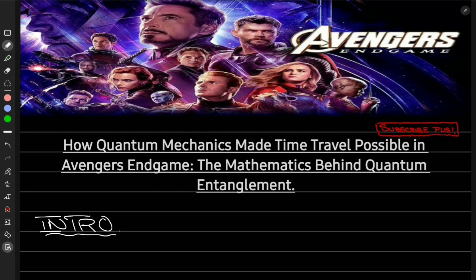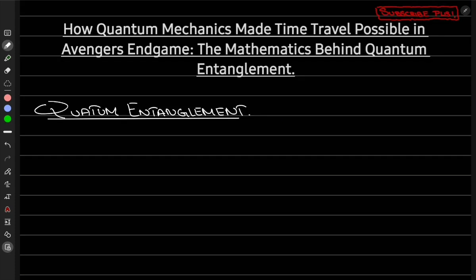Specifically, we can explore the concept of quantum entanglement, which plays a crucial role in the film's explanation of how time travel works. Quantum entanglement is a phenomenon in which two or more particles become linked to each other. In quantum mechanics, we write particles as state functions — there will be a wave function associated to a particle. This wave function is the quantum state of the particle, which stores all of the information about this particle that can be known.